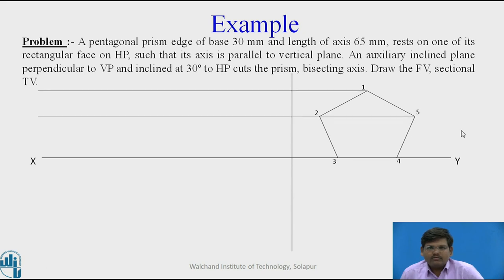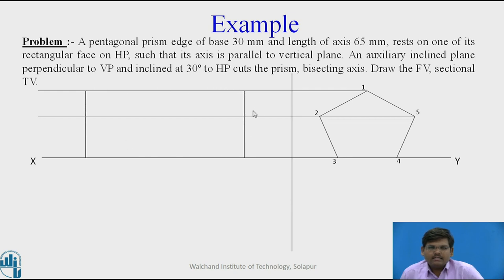Now, as the axis is perpendicular to the profile plane, it will be seen as a point view in the side view. To draw the front view, we project the points from the side view horizontally towards the front view. The height of the prism is given as 65 mm, so we draw a rectangle of 65 mm with this height.